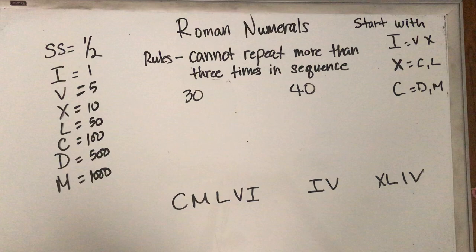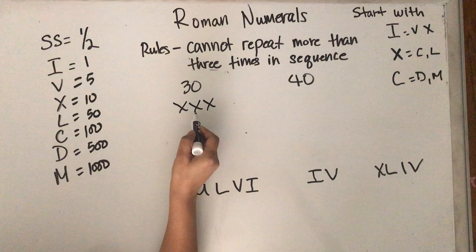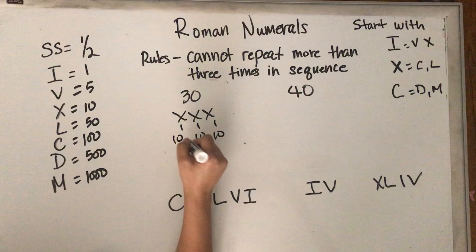For example, 30 is written X, X, X. 10, 10, 10. When you add them together, it becomes 30.